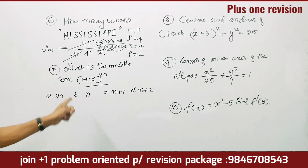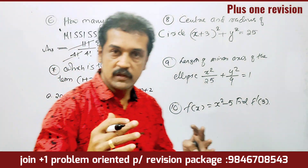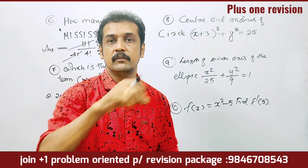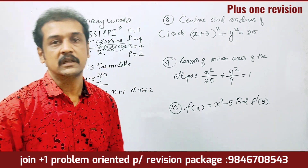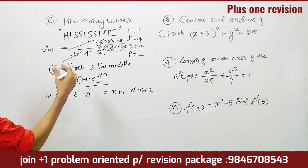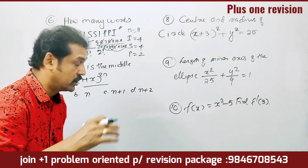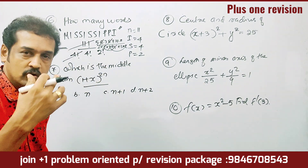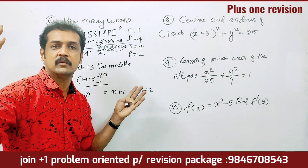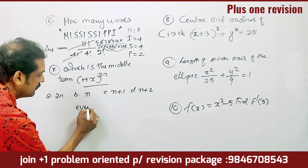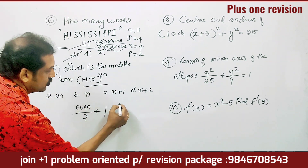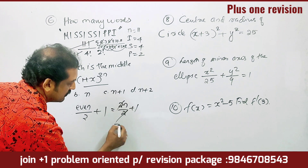Which is the middle term of (1 + x)^2n? We need to calculate the middle term. The options are 2n, n, n+1, n+2. Since 2n is always even, the middle term is the (n+1)th term. That is, 2n/2 + 1 = n + 1. So the answer is n + 1.